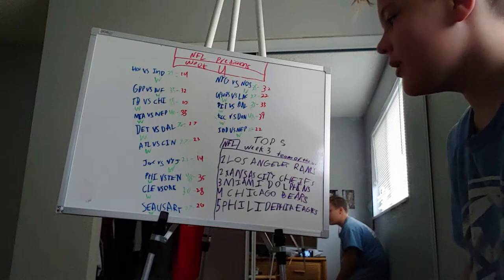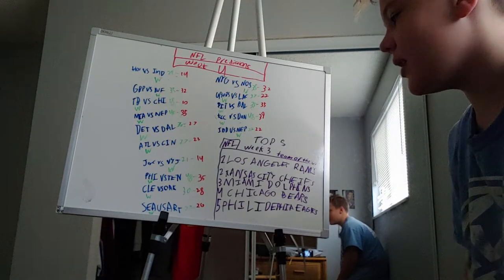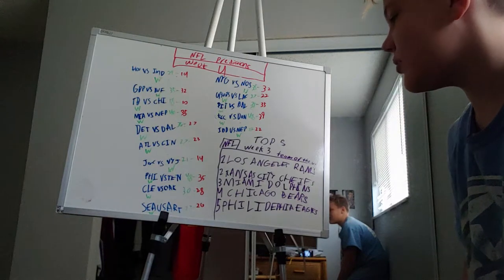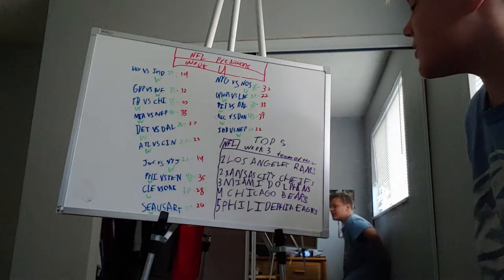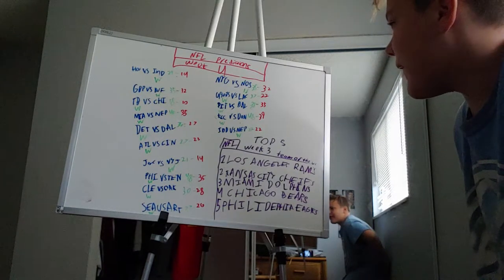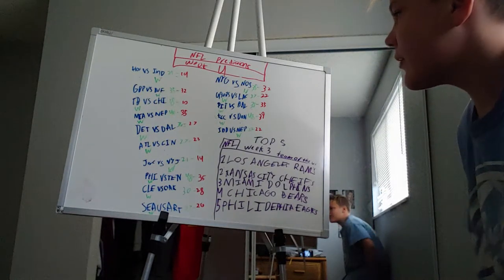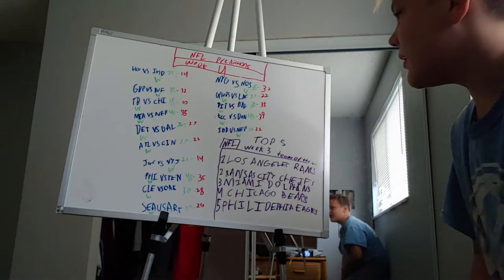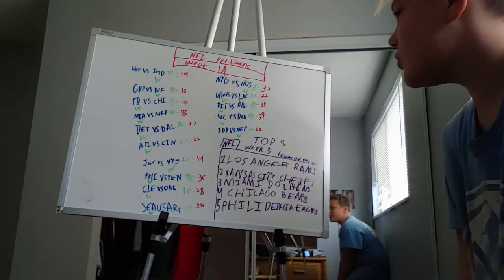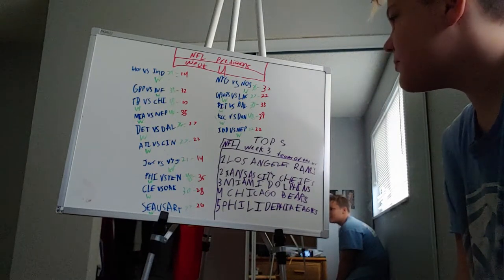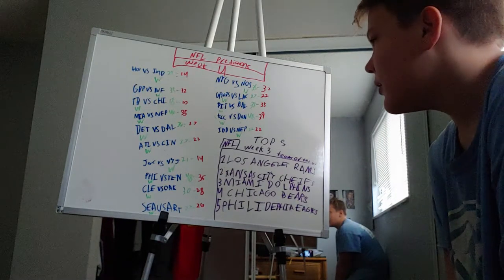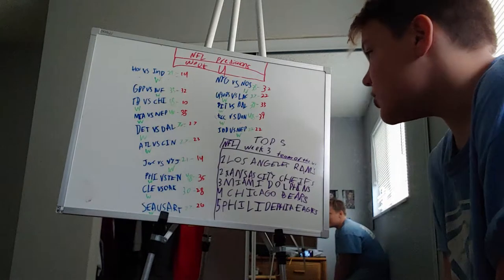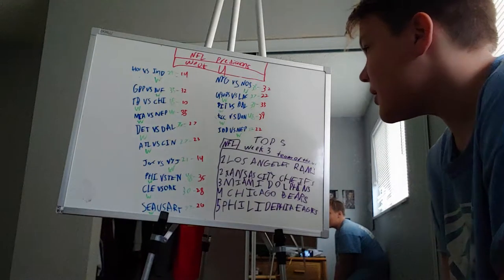New York Jets beats Jacksonville 21-14. Philadelphia beats Tennessee 48-35. Cleveland beats Oakland 30-28. Seattle beats Arizona 27-26. New York Giants beats the Saints 35-32. 49ers beat the Chargers 27-22. Pittsburgh beats Baltimore 38-35. And Kansas City Chiefs beat the Denver Broncos 48-39.